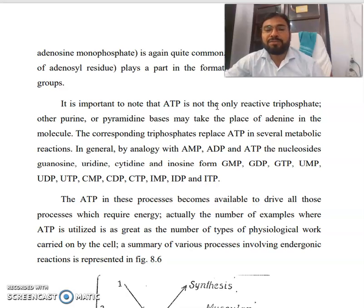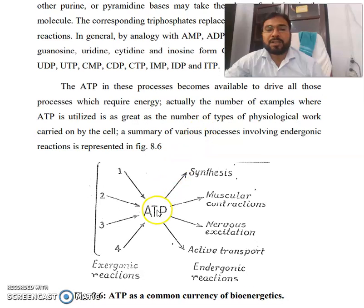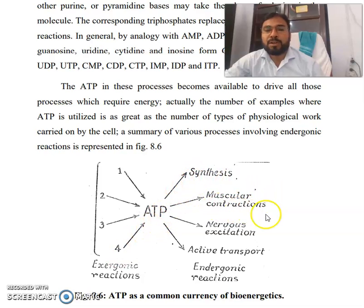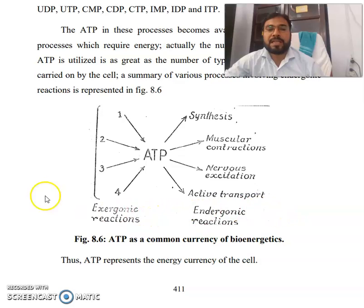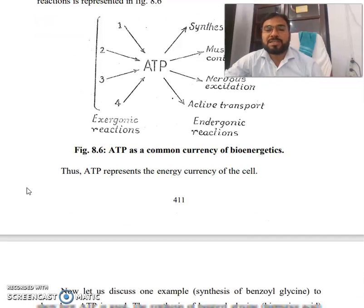A summary of various processes involving endergonic reactions shows ATP being utilized for synthesis, muscular contraction, nervous excitation, active transport, and endergonic reactions — these are driven by exergonic reactions. ATP is a common currency of bioenergy and represents the energy currency of the cell.